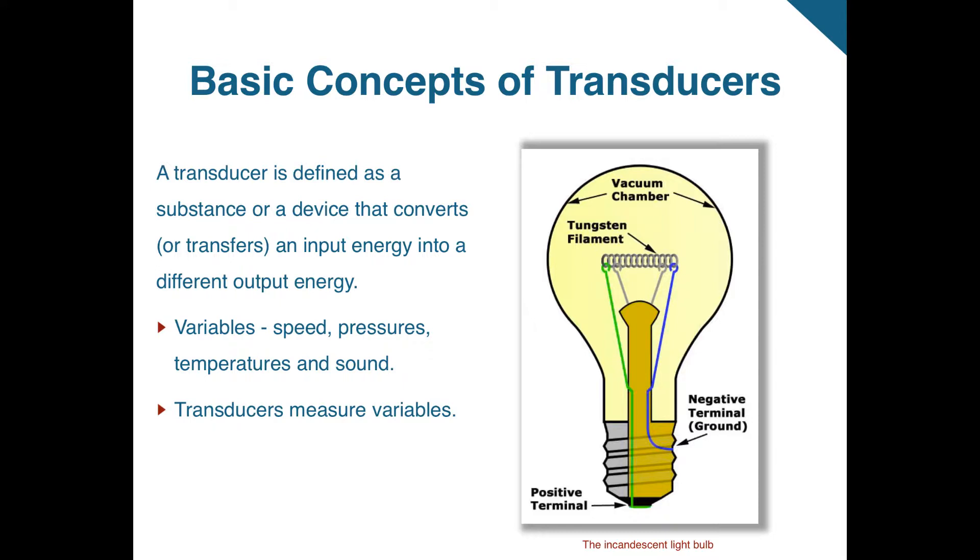We'll start with variables. There are many variables that we measure and rely on their output on a daily basis, such as the speed of a car, heater levels, oven temperatures, and light levels. The device that converts one type of input to another type of output are transducers. For example, going back to the incandescent light bulb, the more current or input that flows through the tungsten filament, which is the transducer, the brighter the bulb, or the output. The tungsten filament is converting electrical energy to light. So once again, a transducer can be a simple device or substance like the tungsten filament, or the mercury in the thermometer that converts an input energy into a different output energy, such as current to light or temperature to motion.